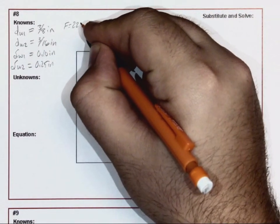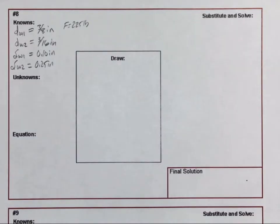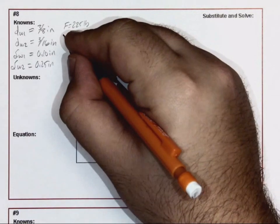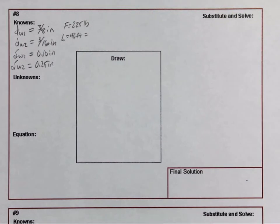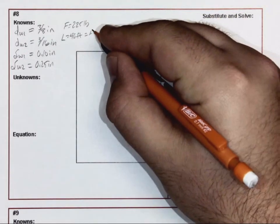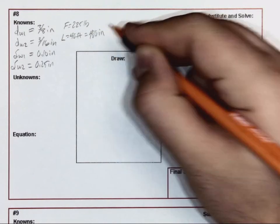And then some of our other unknowns: we've got a force of 225 pounds being applied. Our length is 40 feet. Let's go ahead and convert that over into inches, so multiply by 12. I'm going to get 480 inches.